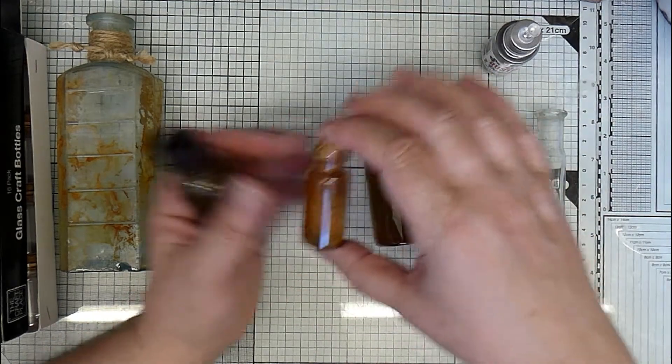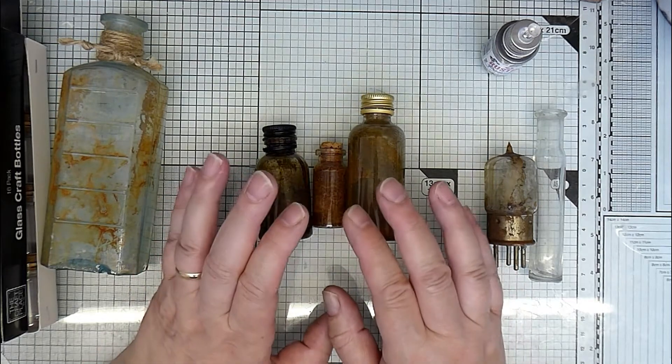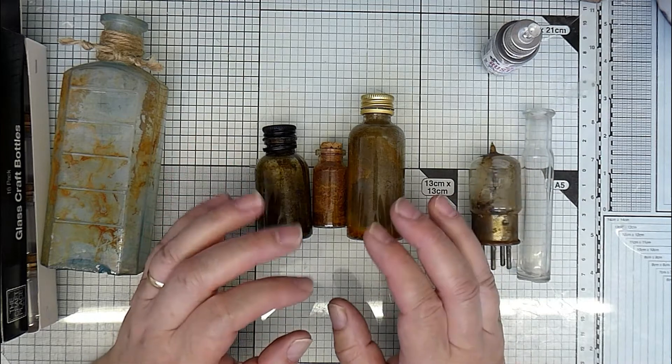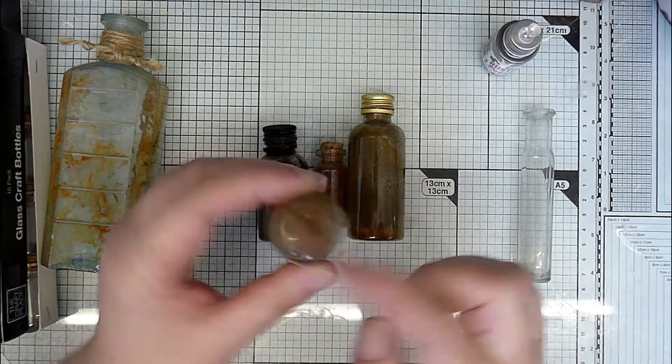So these are the rusty bottles. Very simple technique as I say. I have covered it on one of my other videos but I wanted to just do this on its own because on the other video I did rusting this.